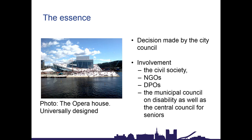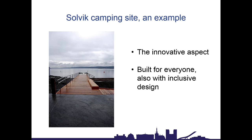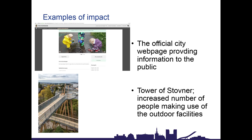A photo of the Universally Designed Opera House is shown. As an example, Solvik camping site was specifically developed using Universal Design. An image also shows Stovner Tower, reached by a 260-meter accessible footpath featuring braille instructions and a tactile map.